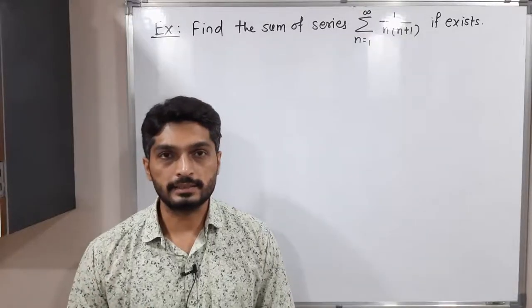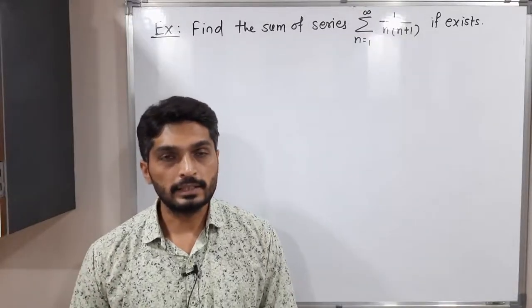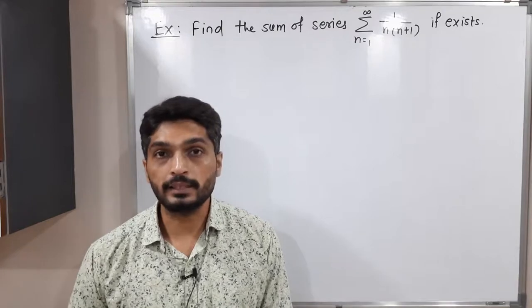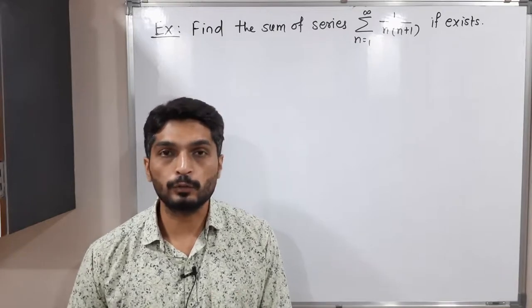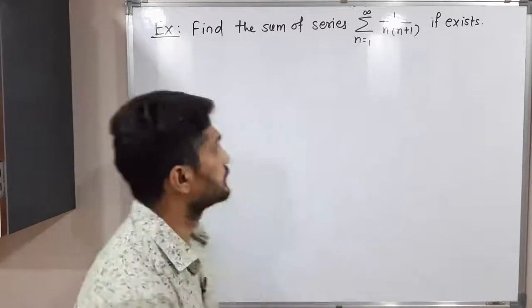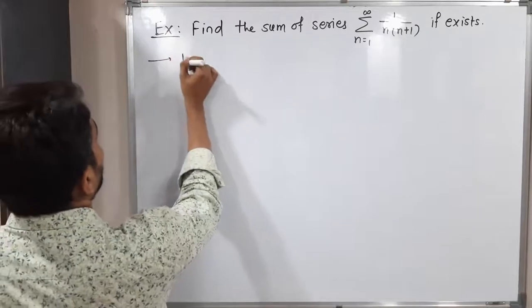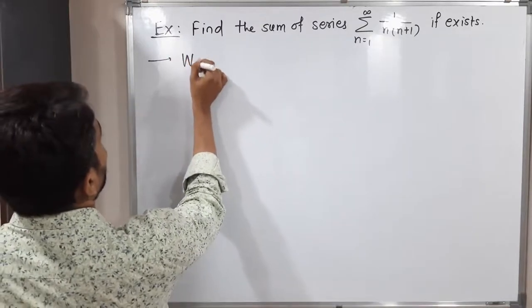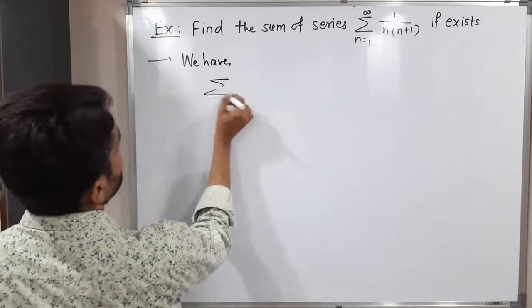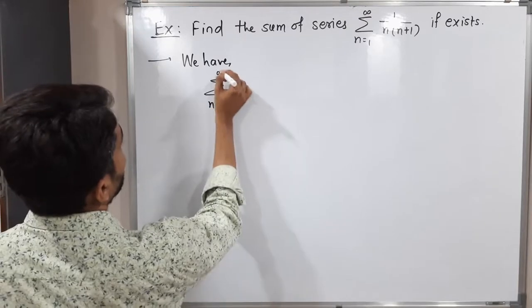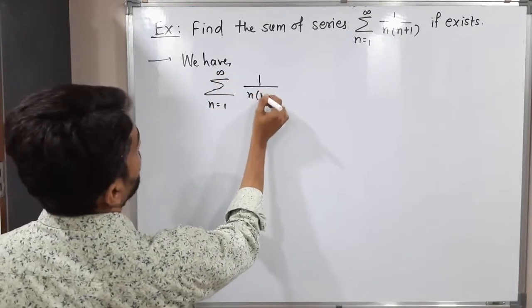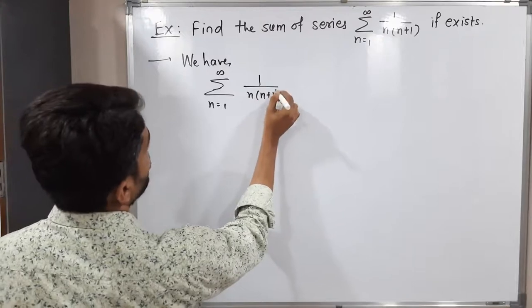Let us discuss this example. We have this series and we have to check whether it is convergent or not. The series is summation n running from 1 to infinity of 1 upon n(n+1).